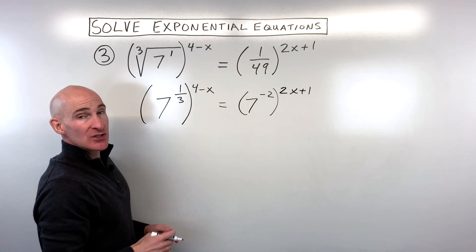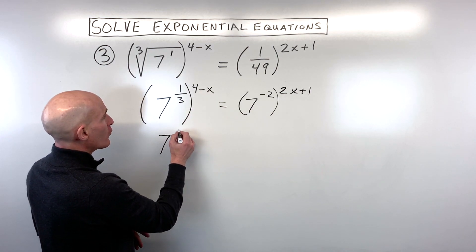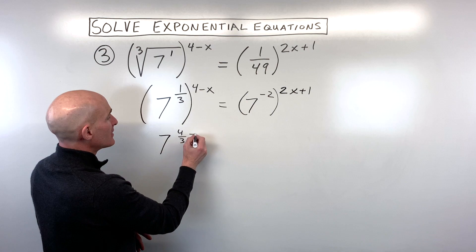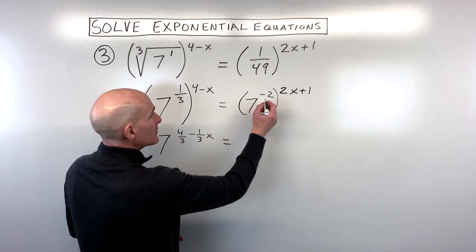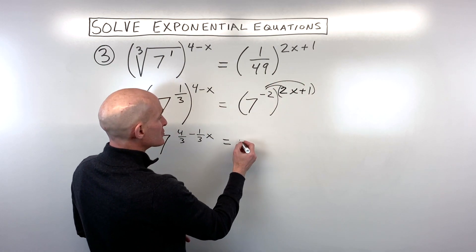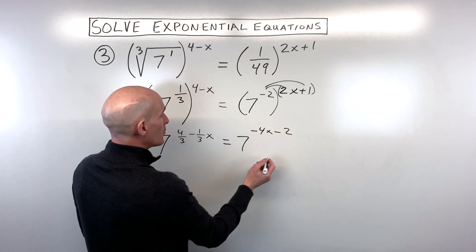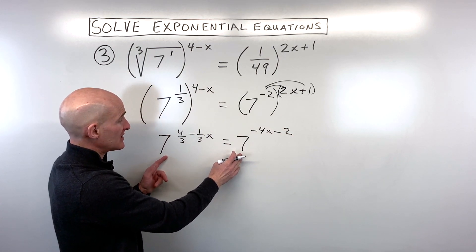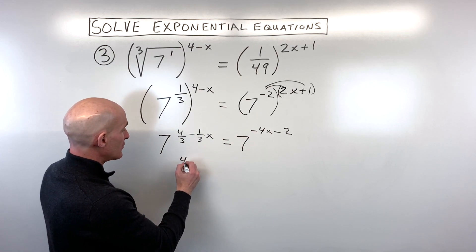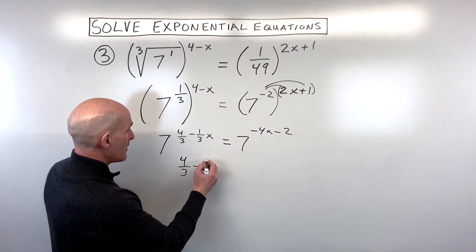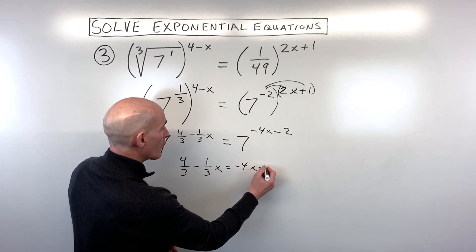We also have the power two x plus one still here. When we have a power to a power we multiply. So we get one third times four which is four thirds, minus one third x, and on the right side we distribute negative two to both terms, giving us negative four x minus two. Now the bases are the same, so we set the exponents equal: four thirds minus one third x equals negative four x minus two.